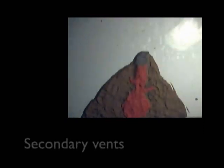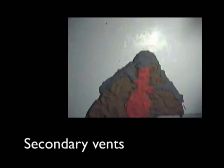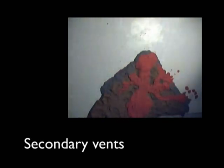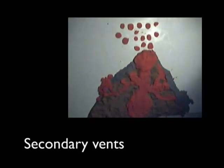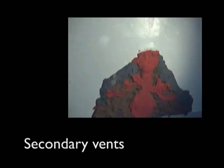Another feature of a volcano is secondary vents. These vents are joined to the main vent and form when magma moves along weaknesses in the volcano's core to reach the surface on the side of the volcano.